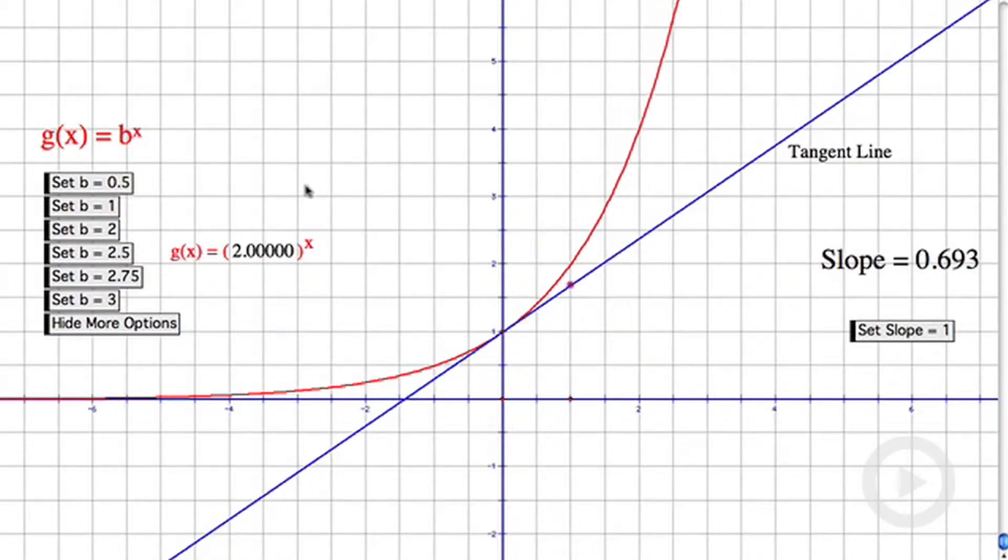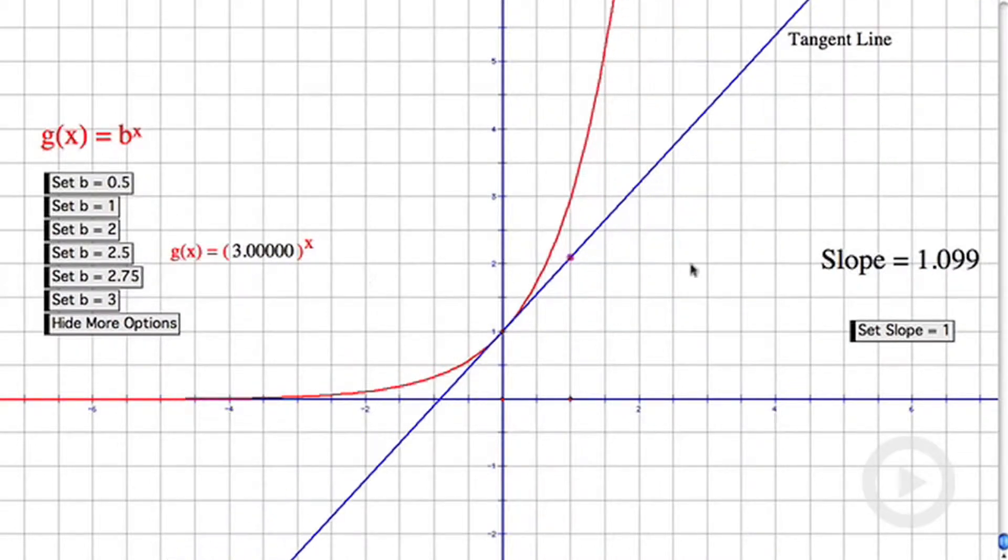When b equals 2, again the slope is 0.693. When b is 3, the slope is 1.099. So that makes me wonder, where's the slope equal to 1?